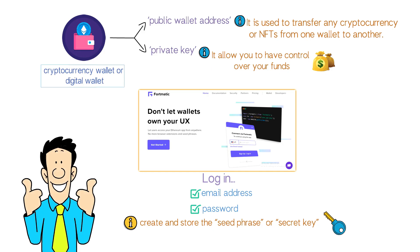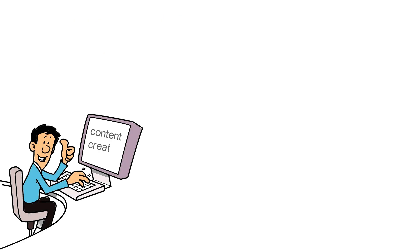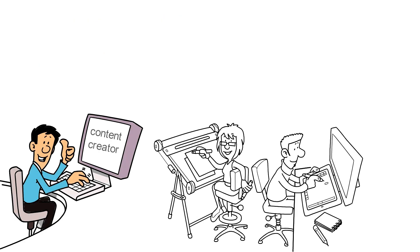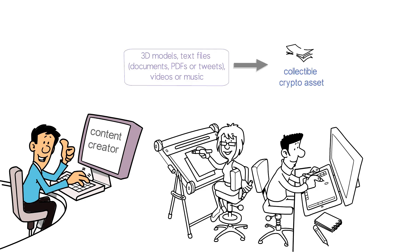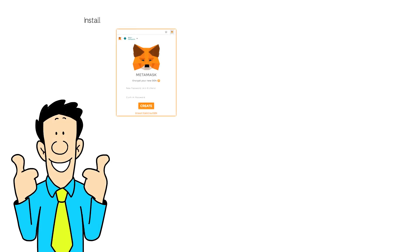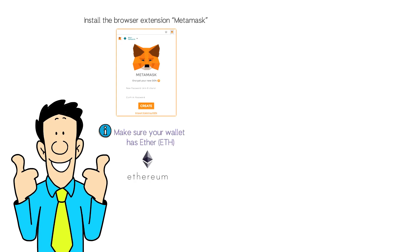Once you have all that, you can mint an NFT yourself. Literally any digital content or file can be turned into an NFT asset. So if you are a content creator, graphic designer, or digital artist, you can easily turn your work — be it 3D models, text files, documents, PDFs, tweets, videos, or music — into a collectible crypto asset with real cash value. The process is generally simple. If you are using Google Chrome, you can install the MetaMask browser extension, which is the default wallet of most NFT marketplaces. Make sure your wallet has ETH, the native cryptocurrency of the Ethereum blockchain.